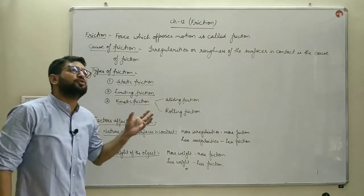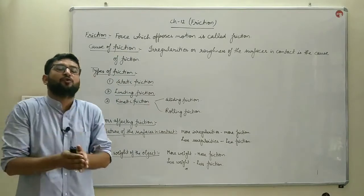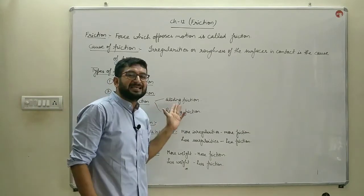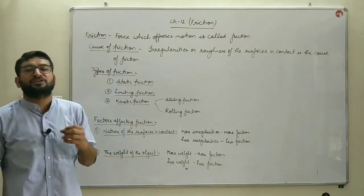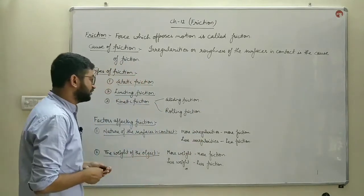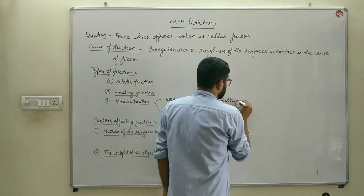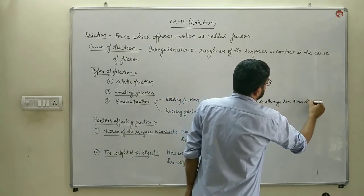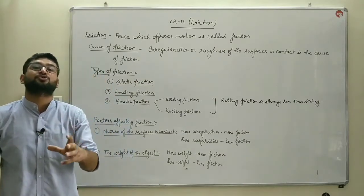Kinetic friction is of two different kinds based on the type of motion. The first is sliding friction — the opposing force which comes into play when one object slides over the surface of another. The second is rolling friction — the opposing force that comes into play when one object rolls over the surface of another. One important point: rolling friction is always less than sliding friction. For that reason, we sometimes convert sliding friction into rolling friction.